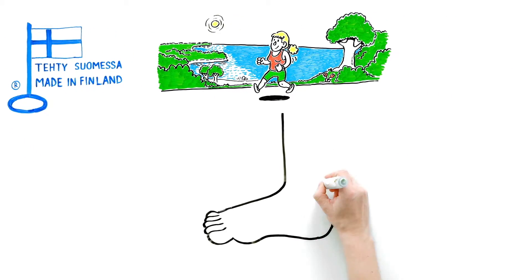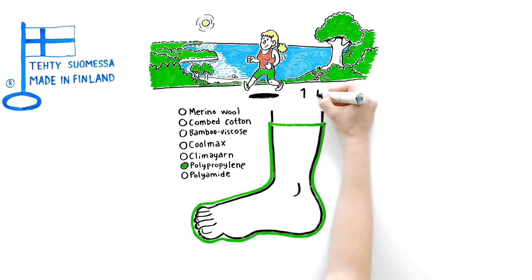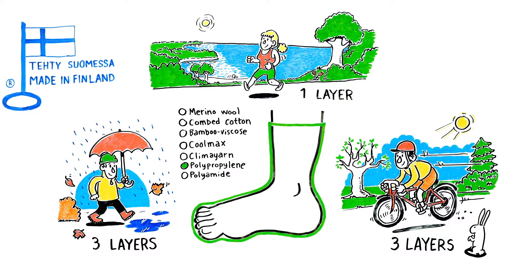In summer, it's enough for your sock to have one thin layer. In spring and autumn, you need three layers.